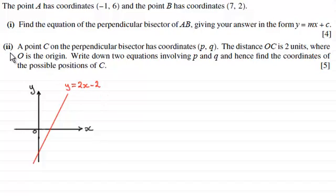Now for this part of the question, we're told that a point C on the perpendicular bisector has coordinates (p, q). The distance OC is two units, where O is the origin. And we've got to write down two equations involving p and q, and hence find the coordinates of the possible positions of C for five marks. So if you'd like to have a go at this, haven't done so already, just give you a moment to pause the video.